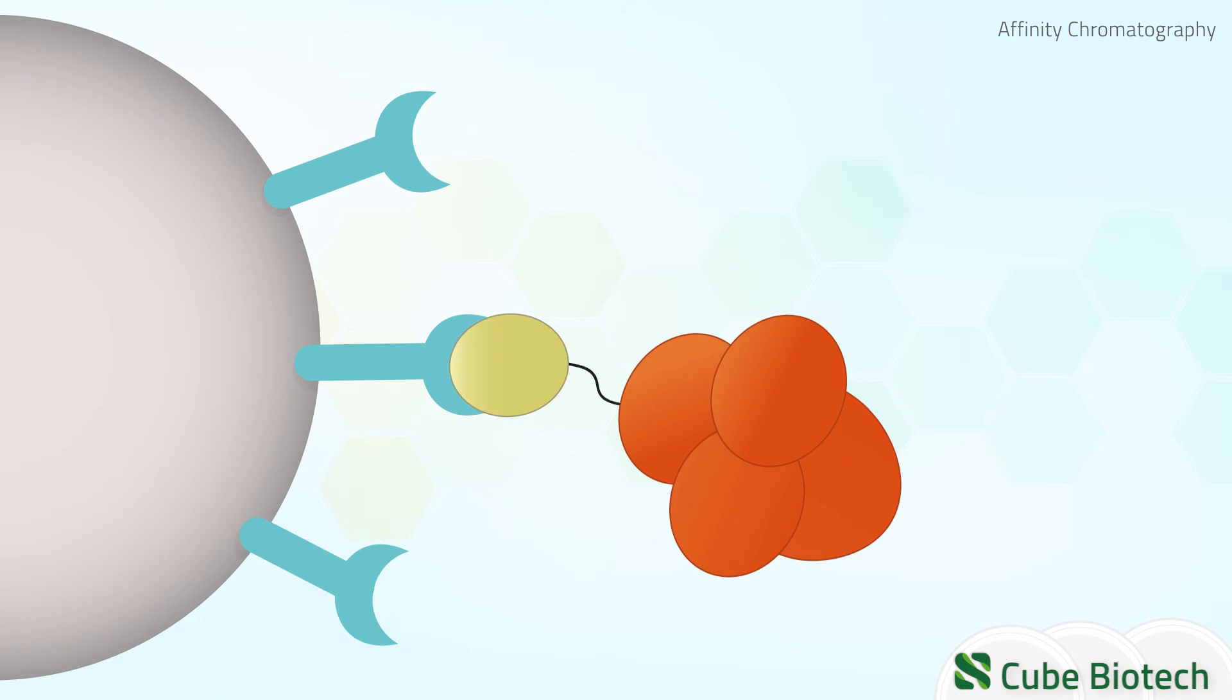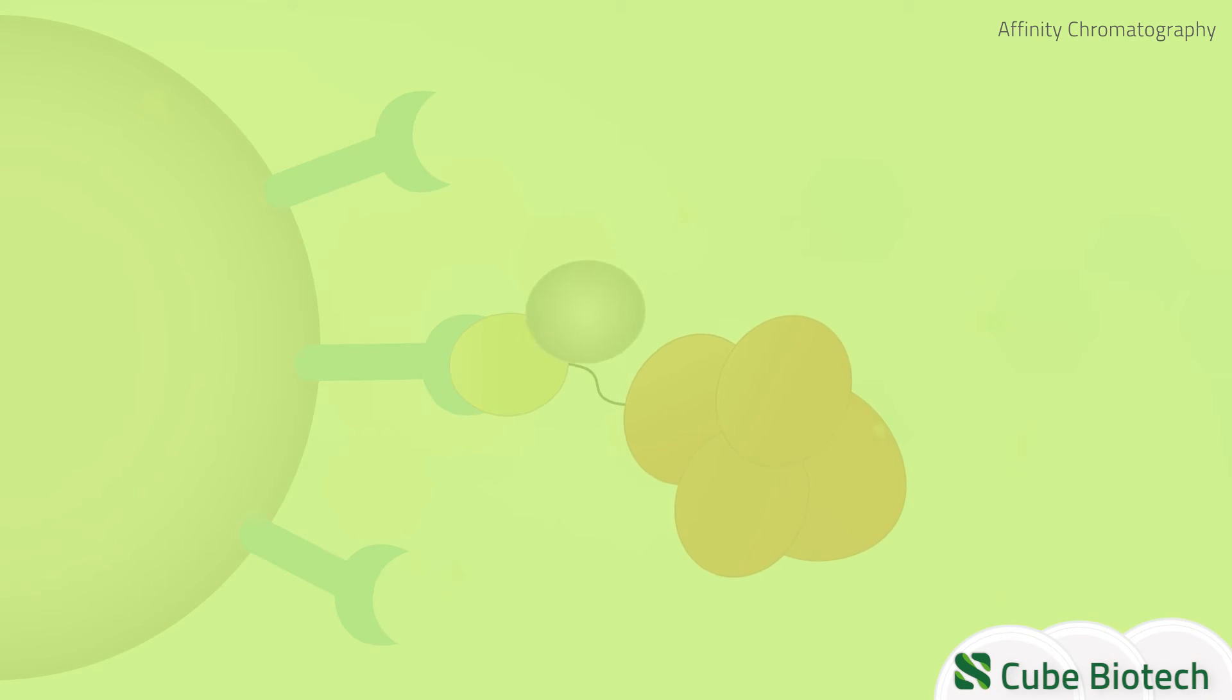Afterwards, the tagged protein is eluted from the beads with a ligand that has an even higher affinity. In the previous example, a high concentration of imidazole would be used to elute a HIS-tagged protein from a nickel NTA column.